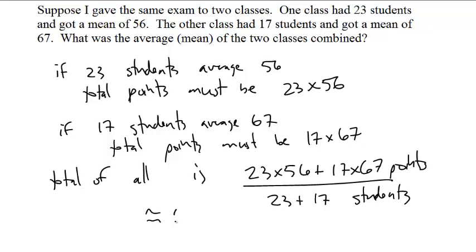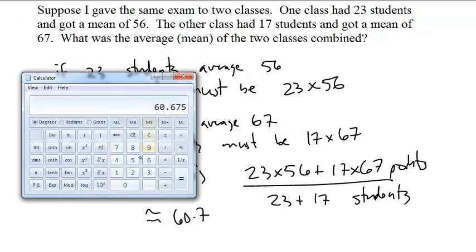That's less than if you just average the two means. What did we get before? 56 plus 67 divided by 2 is...